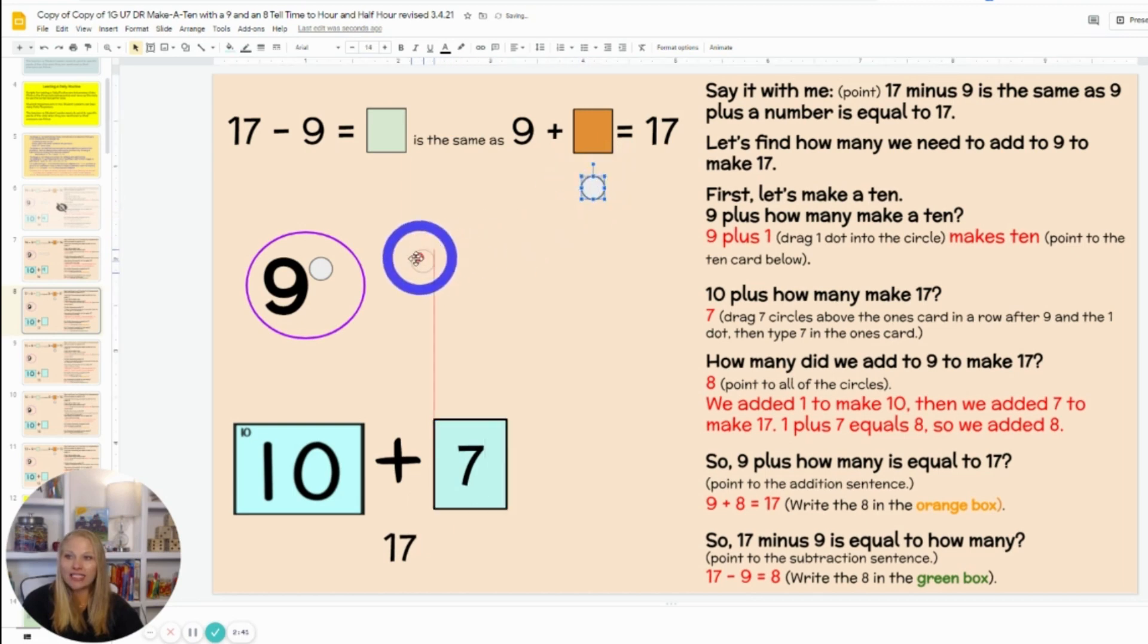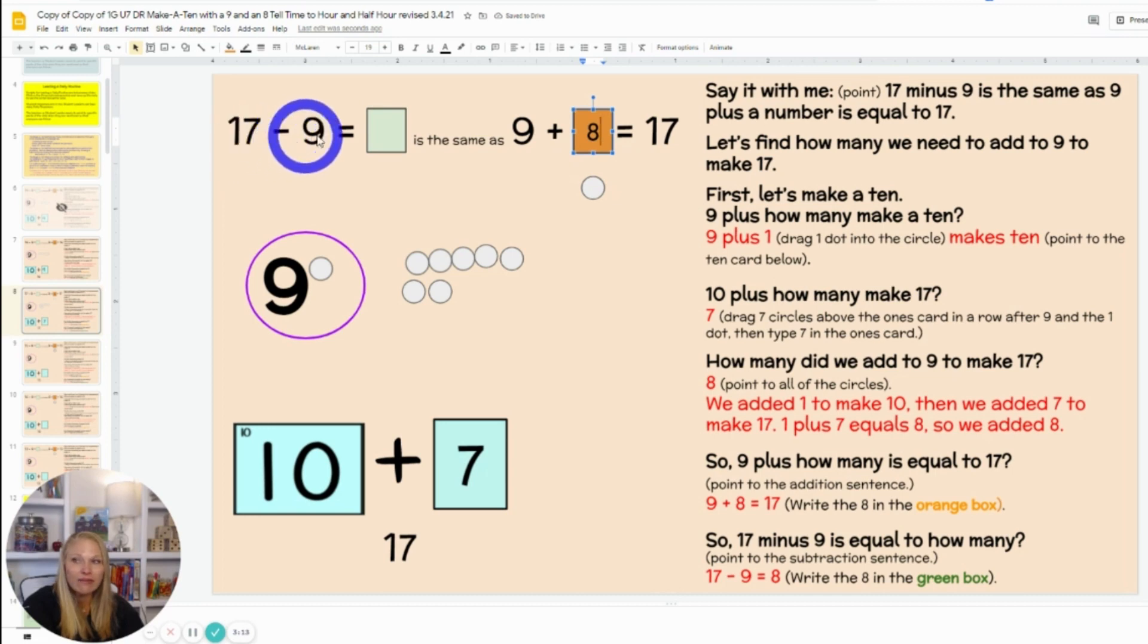So we're going to add 7 more. Count with me: 1, 2, 3, 4, 5, 6, 7. How many did we add all together to 9 to make to 17? How many? Class, 8. We have 7 here and 1 in the circle. We have 8 we added up all together. Let's read it together: 9 plus 8 equals 17, which is the same as 17 minus 9 equals 8.